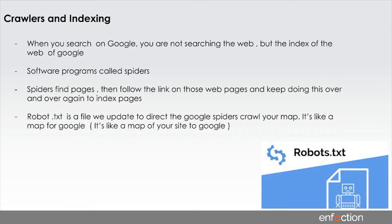When you search on Google, you're not searching the web — you're searching Google's index of the web. Technically, Google only shows what they want you to see. What Google does is indexing: they go to one site, see all the links on that site, go to those links and see what links are on those links — that's how they index all available information. There's something called robot.txt, which is basically a map we build on our site telling the Google spider what it needs to see and what it shouldn't go to, and it pulls that information into your search results.